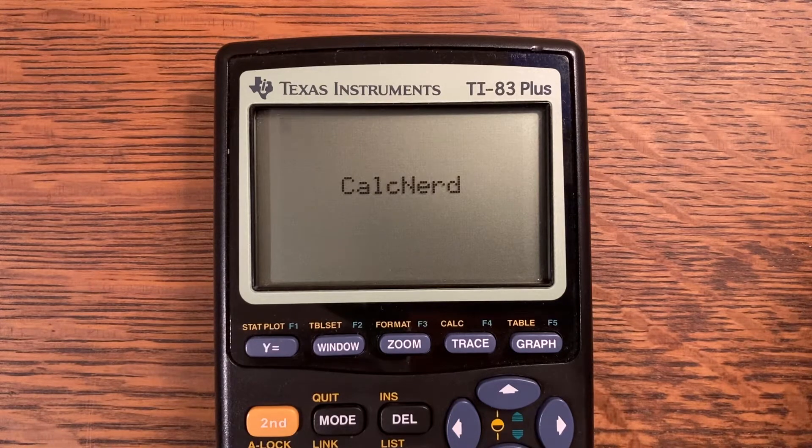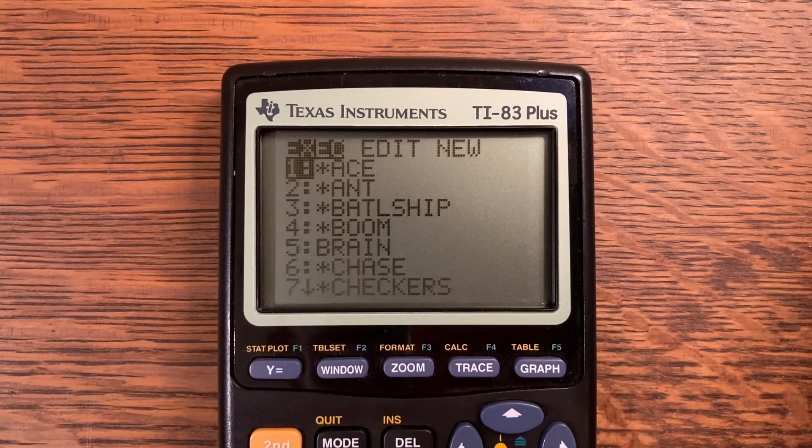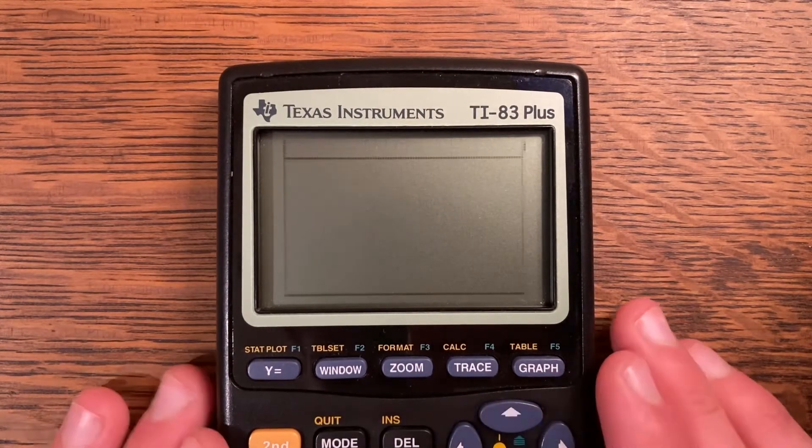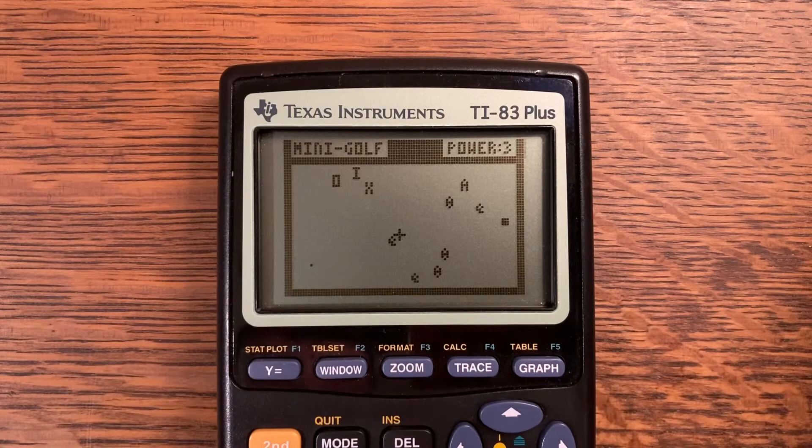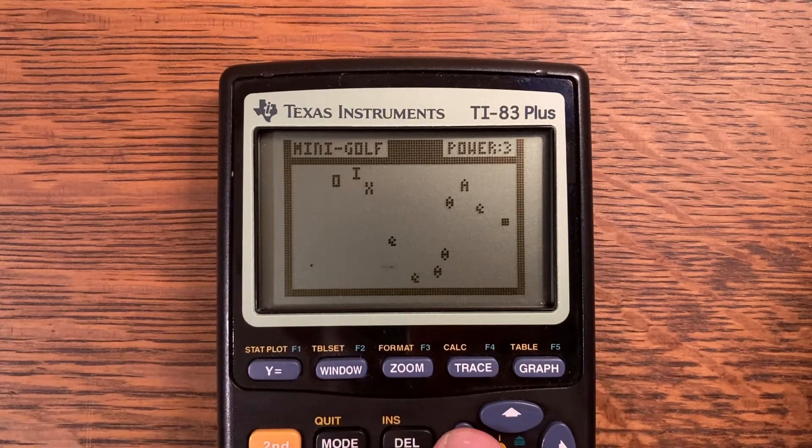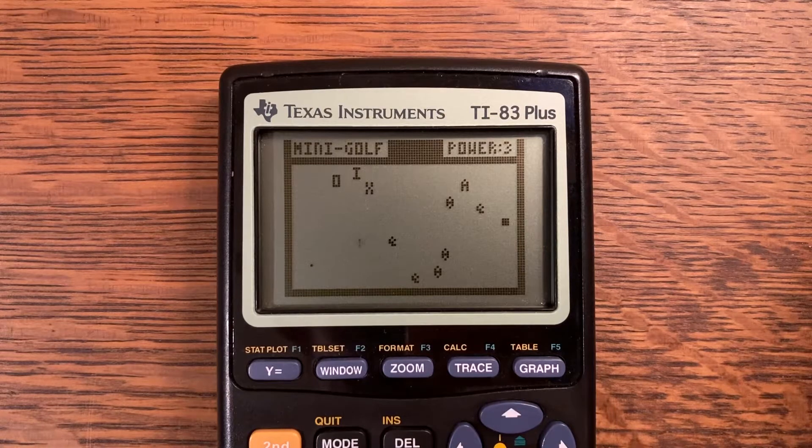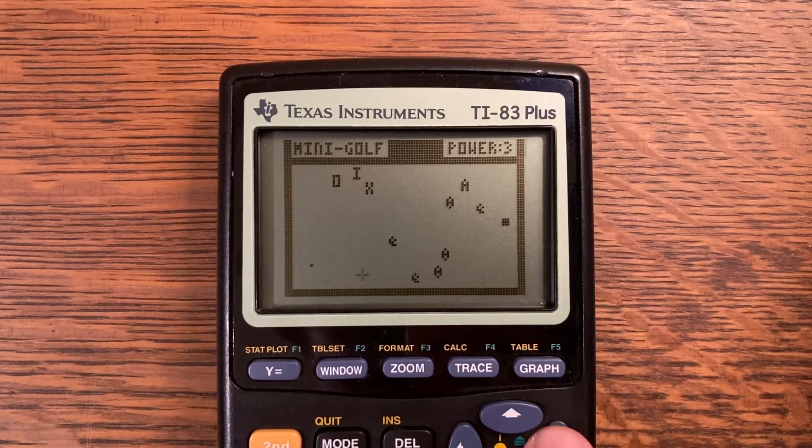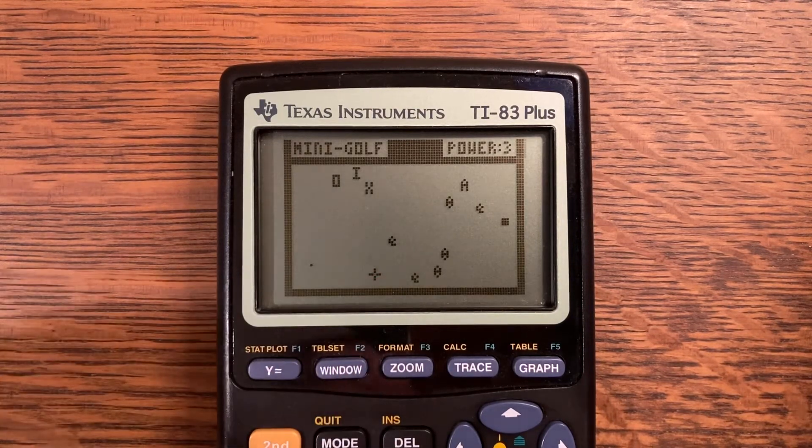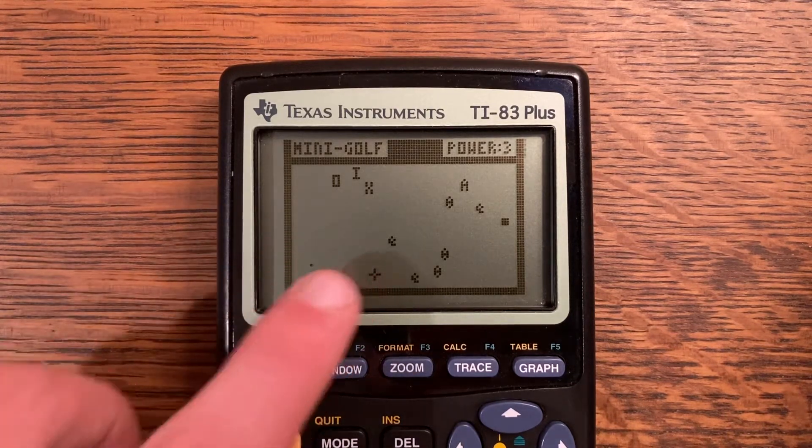I'm going to go ahead and run program mini golf right here. This is a graph screen program which I do not do extremely often just because it does take a little bit longer to make, but they are great and fun games. As you can see, I'm moving the cursor. This is just the normal trace function. This is where you want to aim. You can aim anywhere on the screen. The ball will go right to where you aim on the screen. It uses Bresenham's line algorithm so it will move slowly towards that.